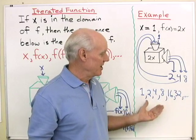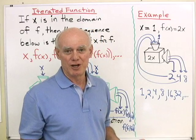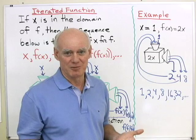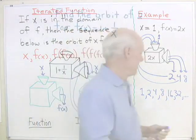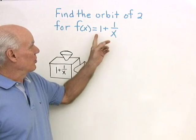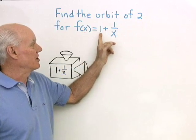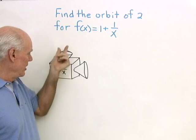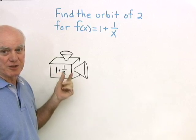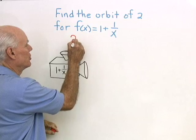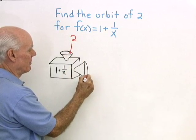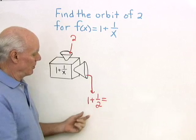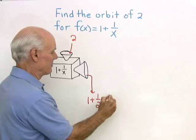It's very predictable, and once I see the pattern I don't have to go back to the function to see the next thing that comes out. Not all of them are quite that easy to see. Here's another orbit that we want to find: the orbit of 2 for f of x equal 1 plus 1 over x. I'm going to input 2, and what comes out is 1 plus 1 over 2, which is 2 halves plus 1 half, so that's 3 halves.